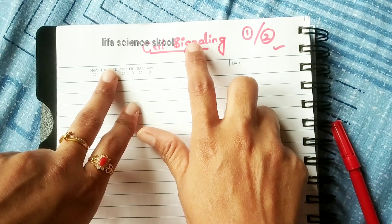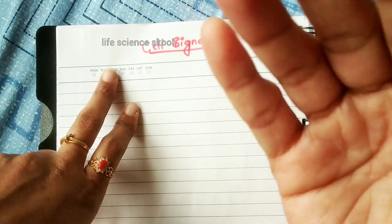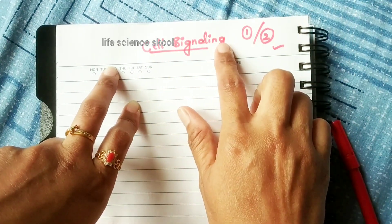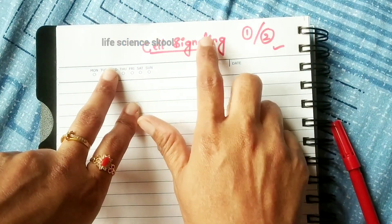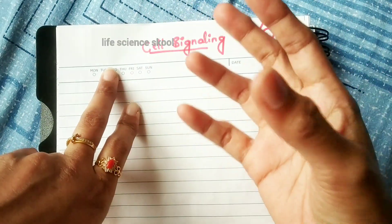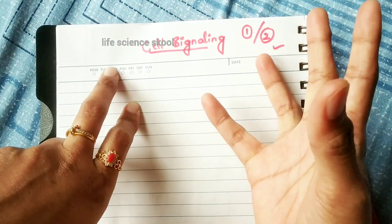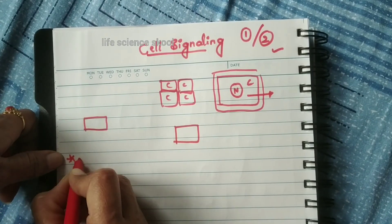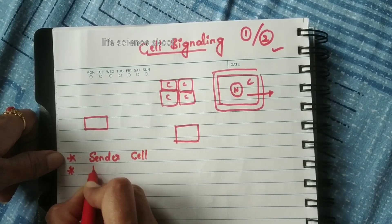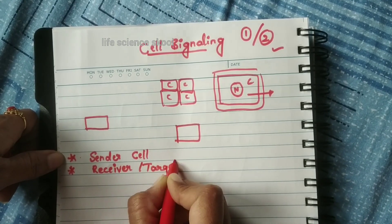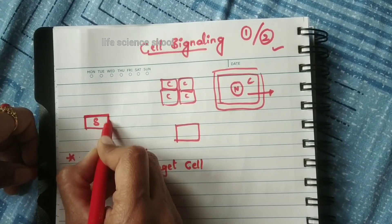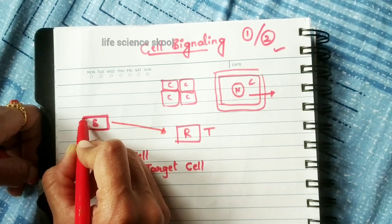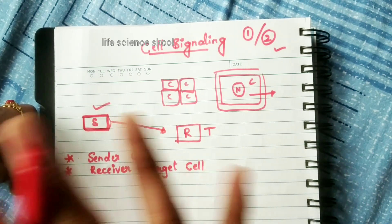So what is cell signaling? Signaling means some kind of signal or stimuli is coming and we have to give a response. Here the cells are communicating — that's why it's called cell signaling. One cell gives the signal and another cell receives that signal. The cell which sends the information is called the sender cell. The cell which receives the information is called the receiver cell or target cell.